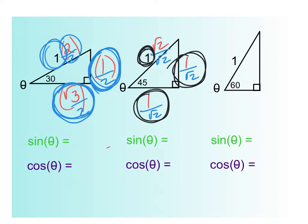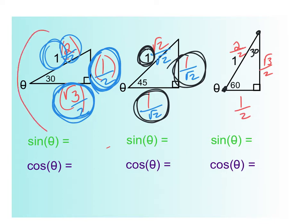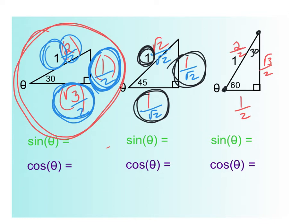Why do they want the hypotenuse to be one? Because we're going to be doing circle trig, and when we do that — to make the unit circle — the radius of the circle has to be one, and this is always going to be the radius of the circle. When it's 60 degrees, it's just a 30-60-90 the other way. Dividing everything by two gives the same result, just with the pointy end up on top.